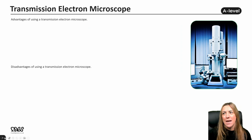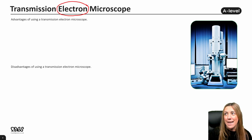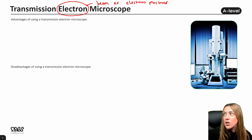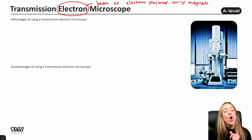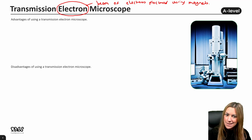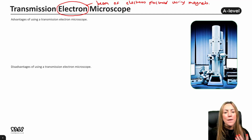Let's think about the transmission electron microscope. As the name suggests, this microscope uses electrons — specifically a beam of electrons — and it is focused using magnets. You don't really have to know any more than that in terms of how it works, but you are expected to know that it uses electrons focused by magnets, whereas the optical microscope uses light and is focused by lenses. That could come up in the exam.